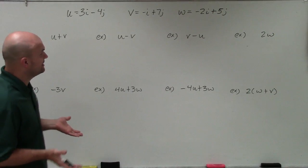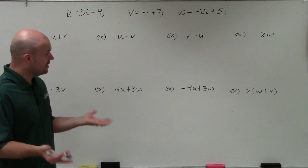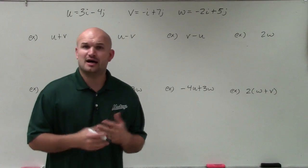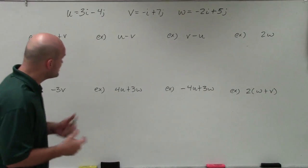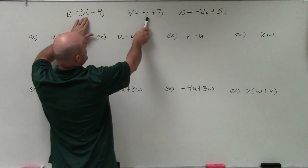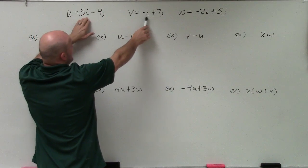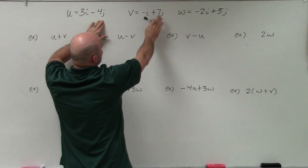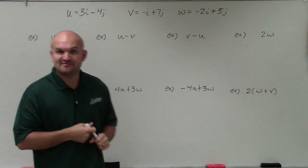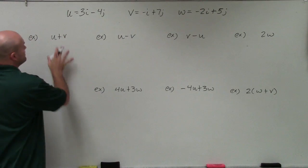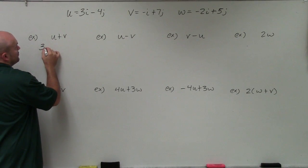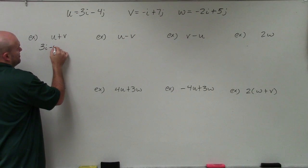The main important thing is when applying operations with vectors, they're very similar to applying operations with numbers and variables. We can only combine like terms, meaning we can only add and subtract the i's with the i's and the j's with the j's. So for instance, in this case I have u plus v. We're going to write vector u as 3i minus 4j.